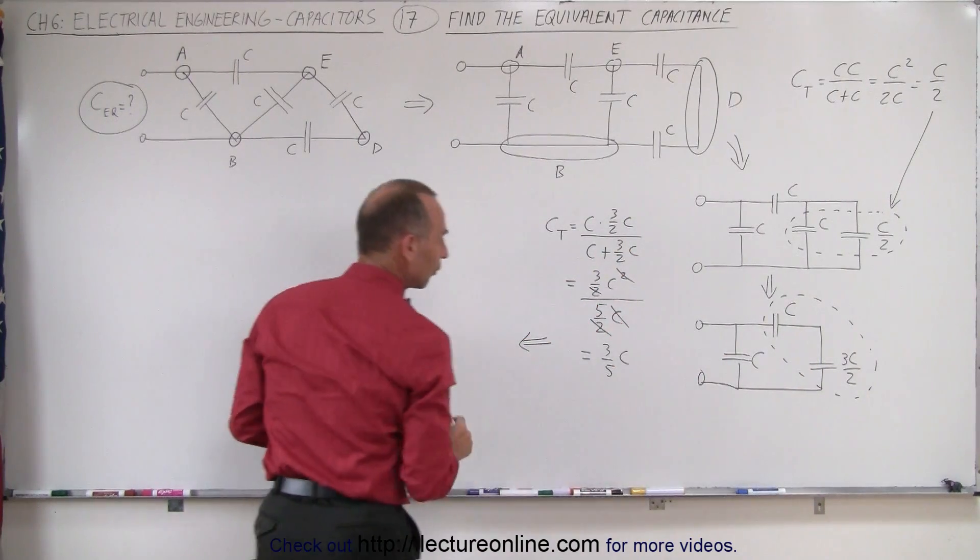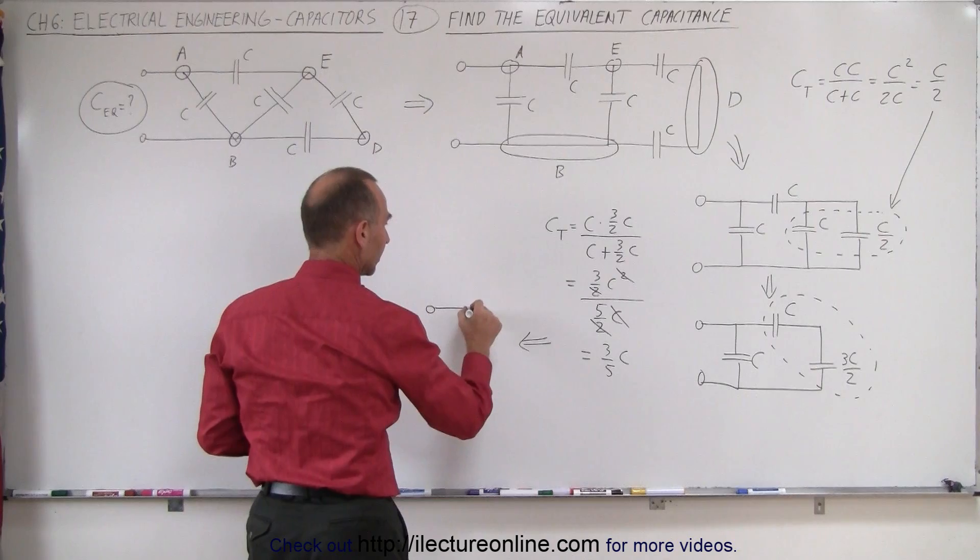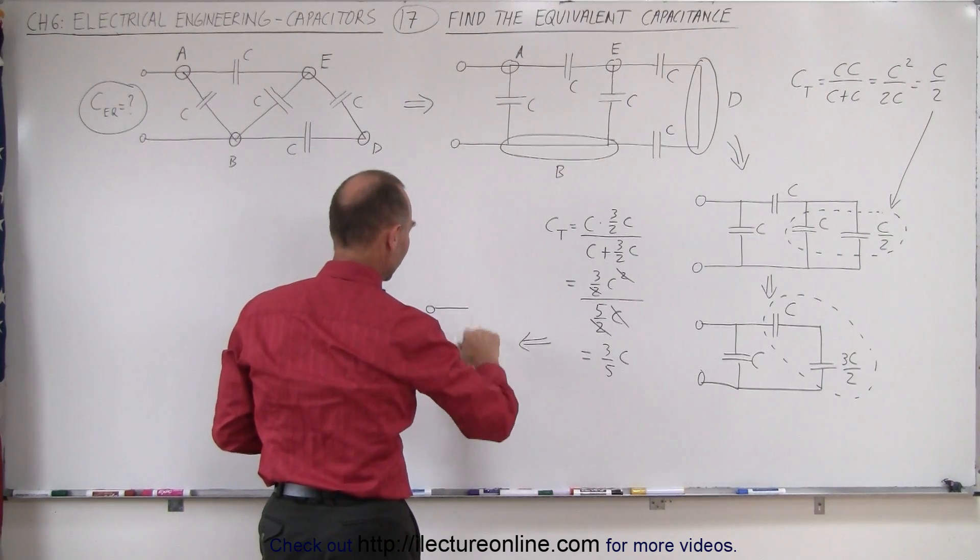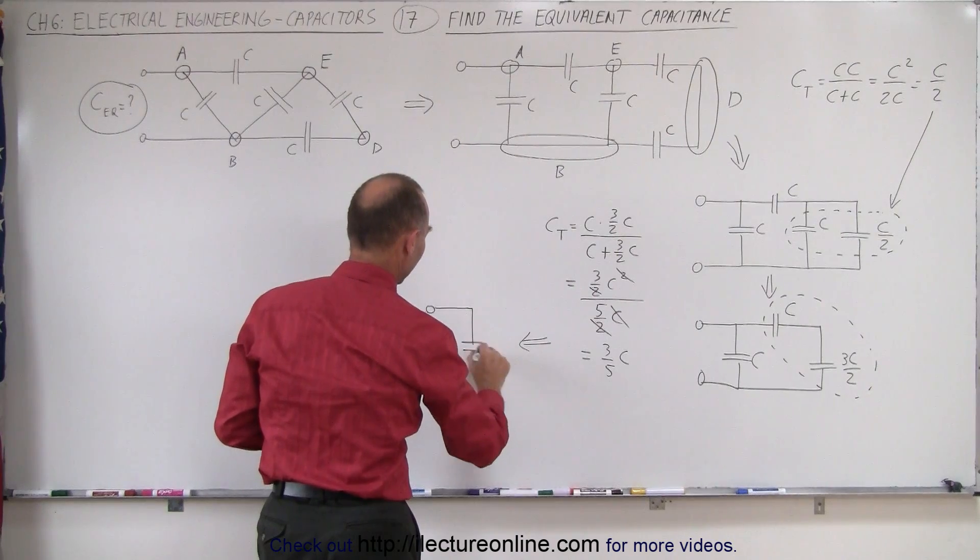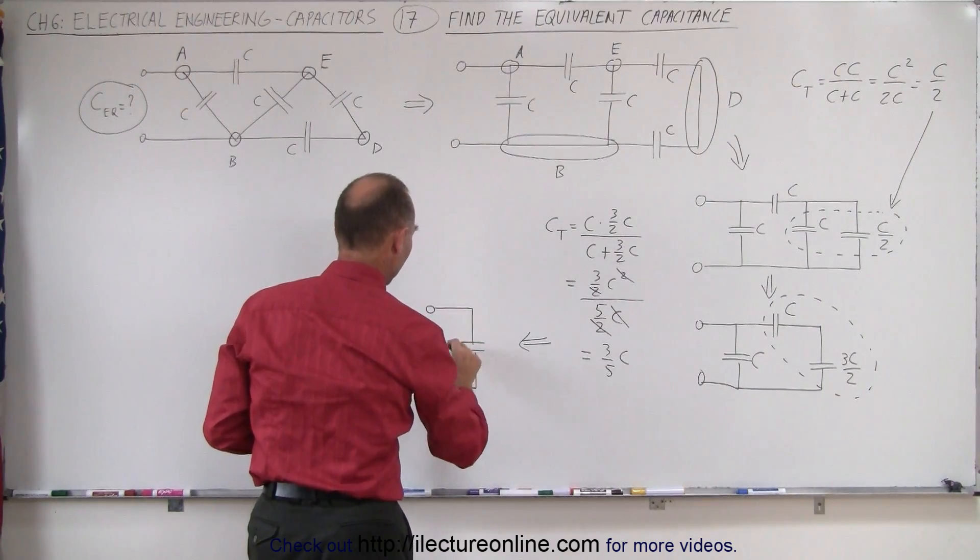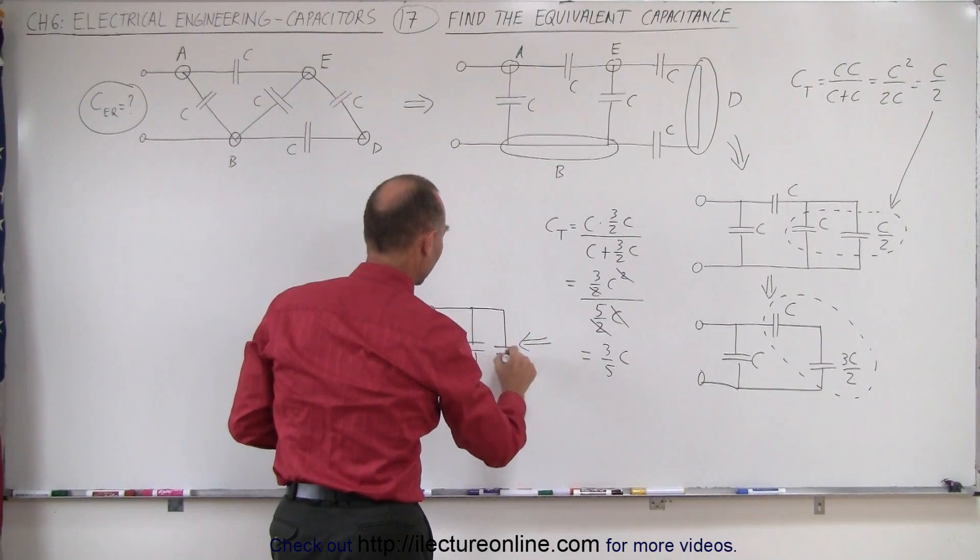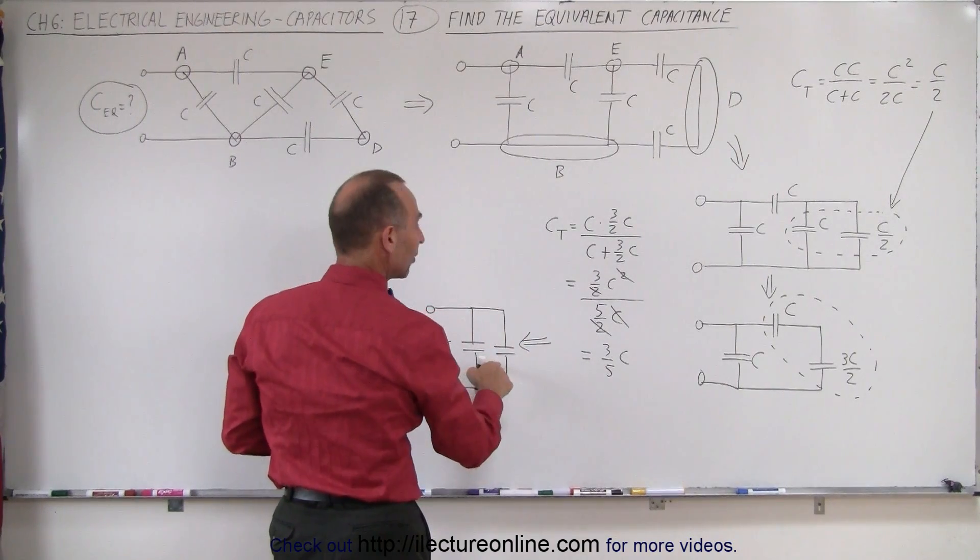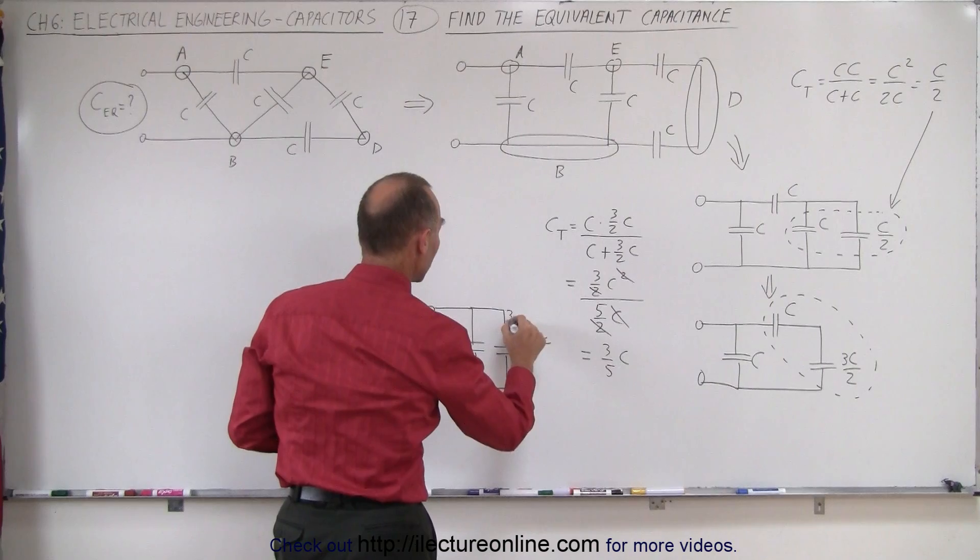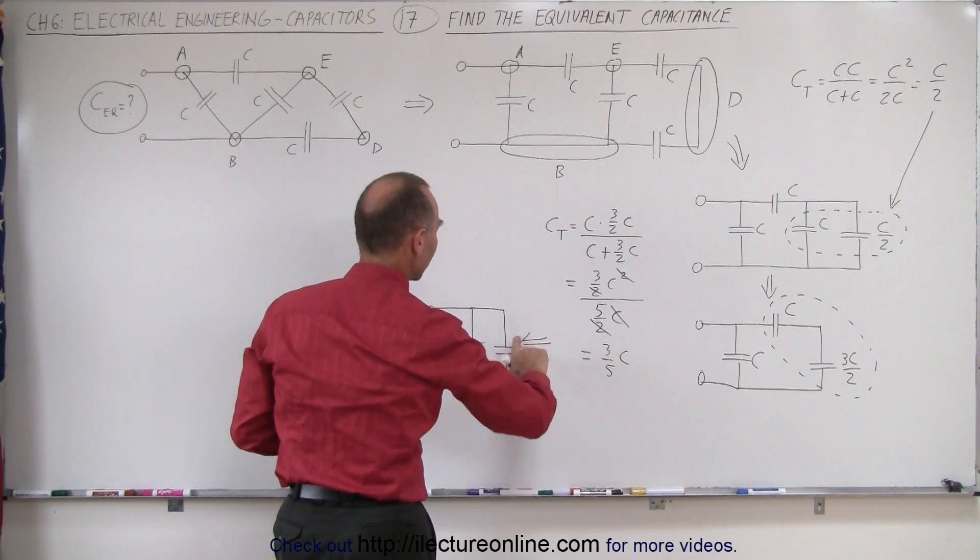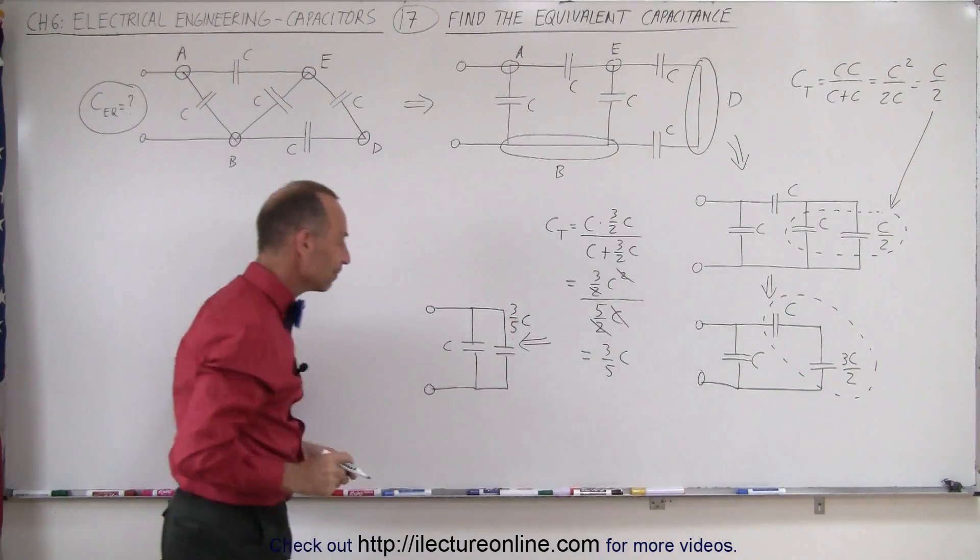So let me then draw the circuit over here. We still have this capacitor, which has capacitance C. And then I've combined those two capacitors. And I'll draw those over here. So this capacitance together will be 3 over 5C. And let me do a little better job of that. 3 divided by 5C.